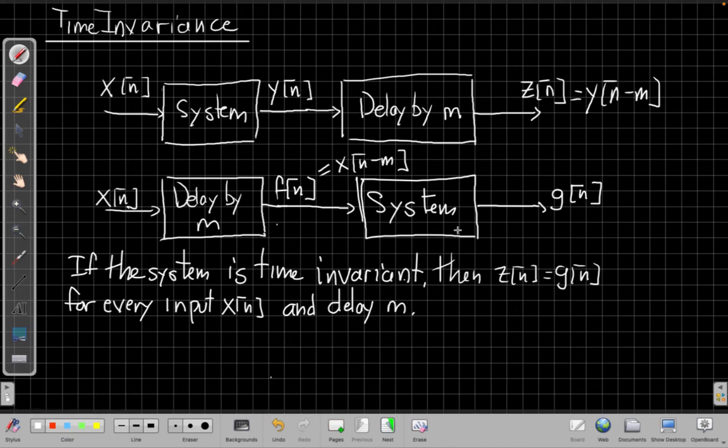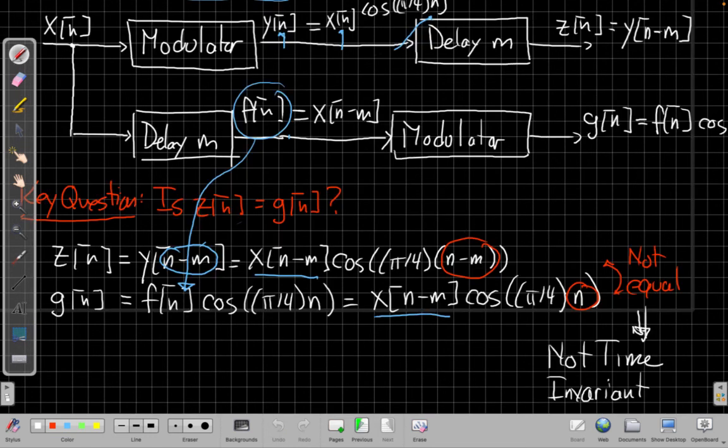Write out expressions for the output for each order and then try to work my way back to see if they're the same. And if they are the system's time invariant. If they're not the same as we saw here with the modulator, then it's not time invariant. Okay so that's all for this time, I'll see you in the next video.